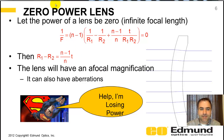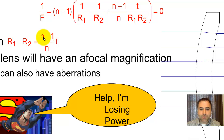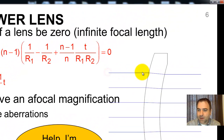You can have a zero power thick lens. Power is one over the focal length, so zero power means an infinitely long focal length. If you set the thick lens equation to zero and solve, the difference between the front and back radius of curvature must equal index minus one, divided by the index times the thickness of the lens. Rick Juergens likes to put a little cartoon of Superman here — "help, I'm losing power." So the rays come in collimated and come out collimated — that's afocal, parallel in, parallel out.